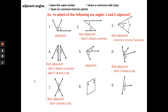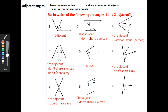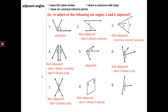Number eight: not adjacent — they don't share the same vertex. These are angles contained within a parallelogram. There's the vertex for one and the vertex for two — not the same. They do share a side, but the different vertices make them non-adjacent. Number nine: those are adjacent.